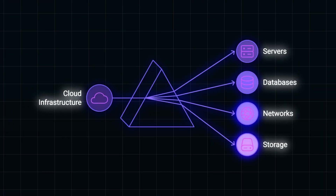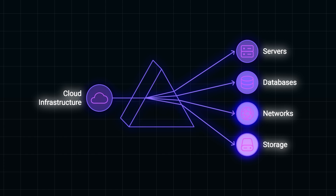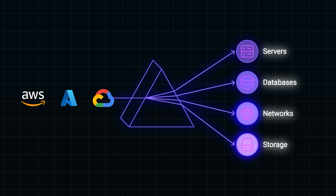In today's cloud infrastructure, you are working with resources like servers, databases, networks, and storage, all of which need to be created, managed, and scaled. Traditionally, you might handle this manually using your cloud provider's console or CLI. But as you can imagine, that process is time-consuming, error-prone, and almost impossible to track efficiently, especially when you are managing large environments or multiple cloud platforms.